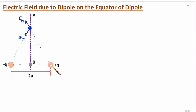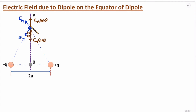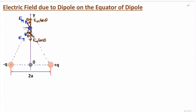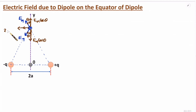The distance from each charge to the observation point is equal, and the magnitude of the charges is also equal, so magnitude-wise E plus Q and E minus Q are the same. If we consider the angle theta, the component of E minus Q is E·cos theta, and the horizontal component of E plus Q is also E·cos theta. These perpendicular components cancel. The components along the axis add together, giving a total electric field of 2E·sin theta in that direction.